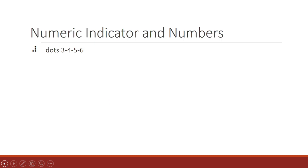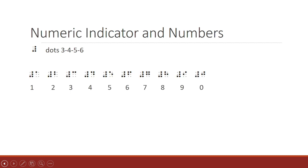The last thing to learn this week is the numeric indicator and numbers. The numeric indicator lets the Braille reader know that everything following the indicator is a number. The numeric indicator is dots three, four, five, six. Everything that follows the indicator is a number. A space breaks the effects of the indicator. You've actually already learned all the numbers. When the first ten letters of the alphabet, A through J, have the numeric indicator in front of them, the Braille reader knows they are numbers.